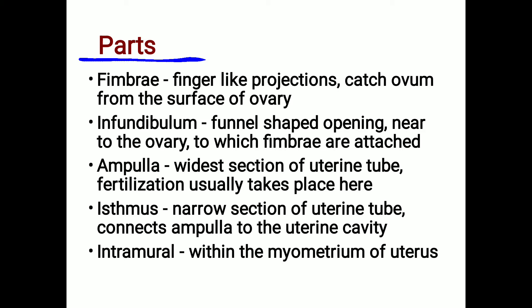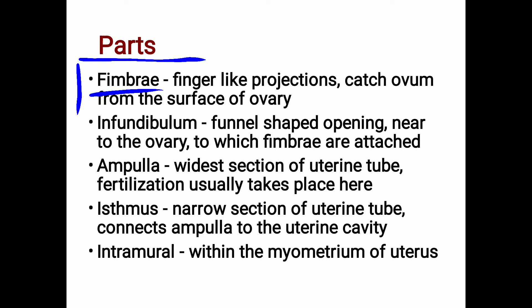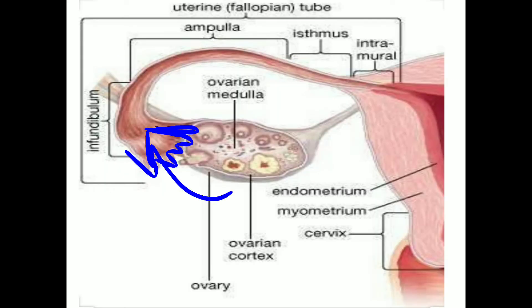There are five parts of the uterine tube. The first is the fimbriae — finger-like projections on the lateral ends of the uterine tube. Their function is to catch the ovum from the surface of the ovary so it enters into the uterine tube.